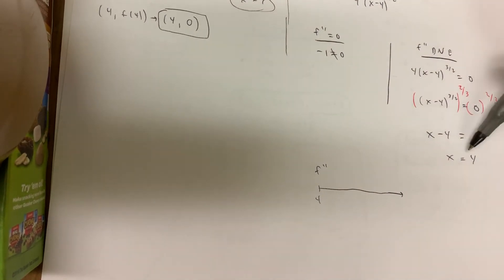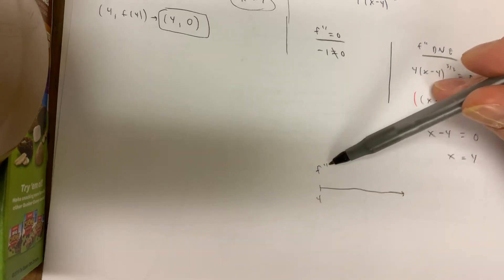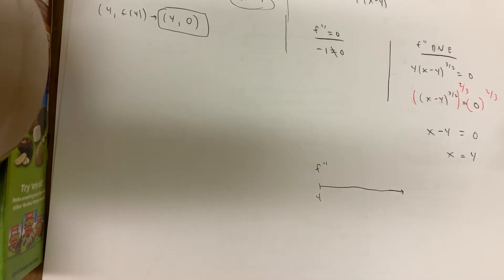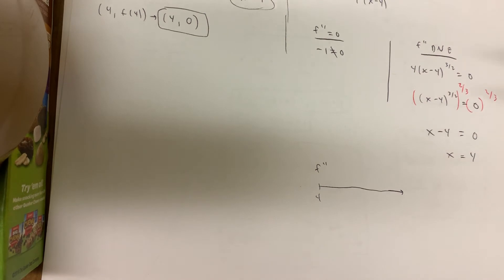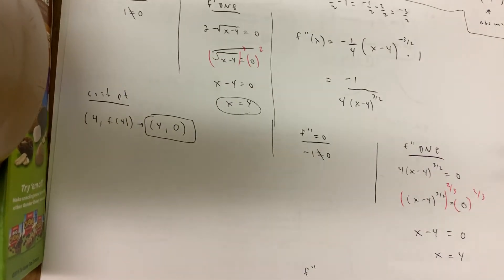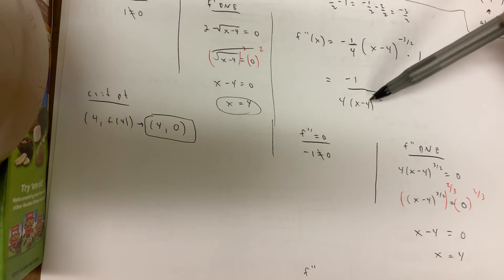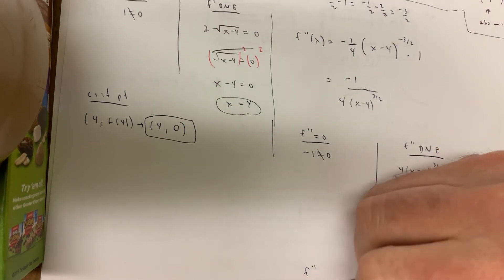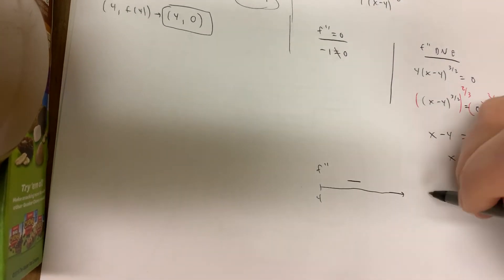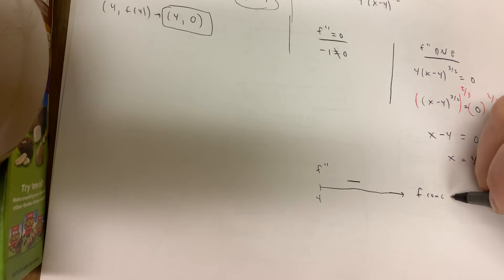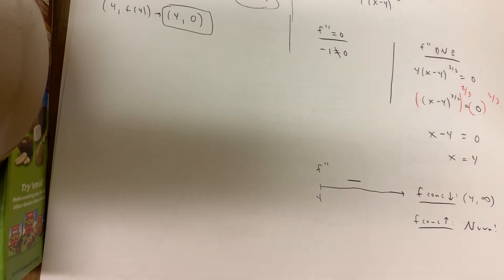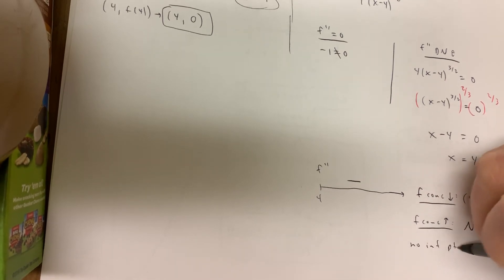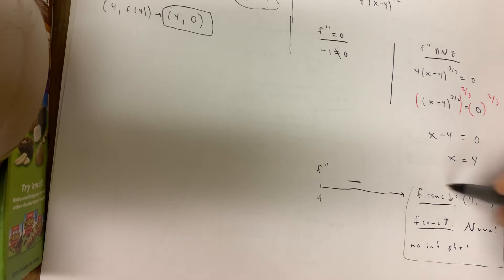We already know there's no inflection point at x = 4 — when we draw the f double prime line, it's bounded on the left at x = 4, unbounded on the right. There's no way there can be a sign change because there's no sign that exists to the left of 4. Plug in x = 5: f″(5) = −1/[4(1)^(3/2)] = −1/4 — negative. So f is always concave down on (4, ∞). f is never concave up, and there are no inflection points.